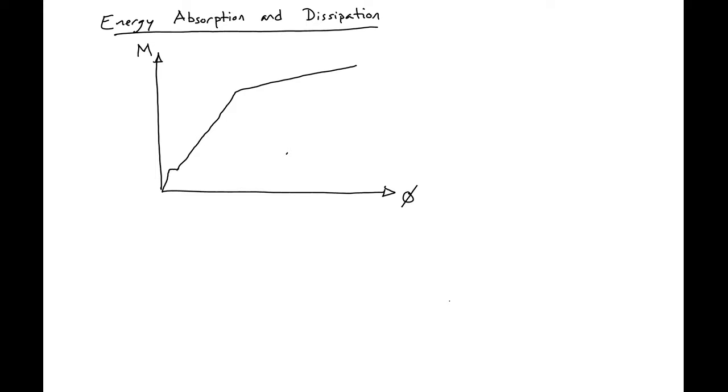So what we can do and what we will do here is we'll approximate our behavior as elastic plastic and we'll call this point My and our yield curvature phi_y and then our ultimate curvature phi_max.